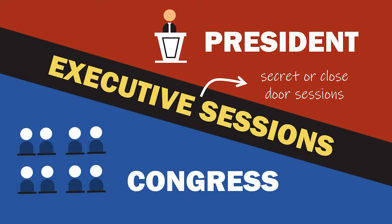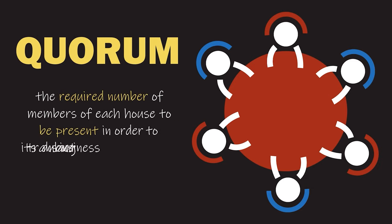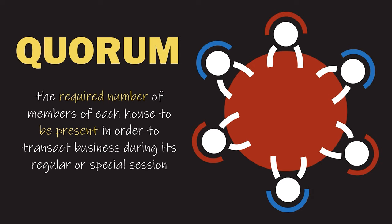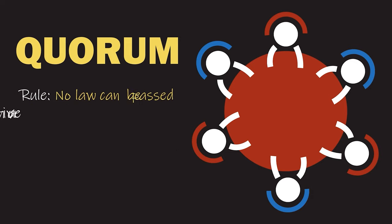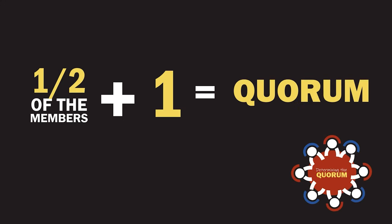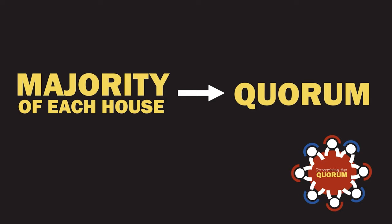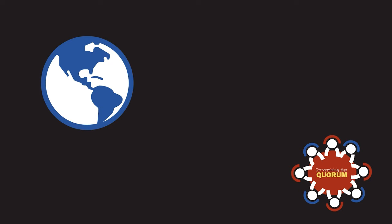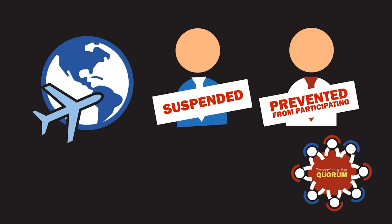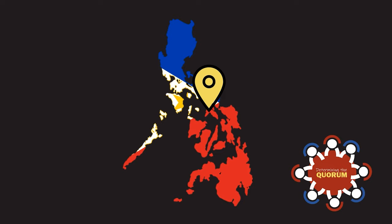Another important topic in Article 6 is quorum. Quorum is the required number of members of each house to be present in order to transact business during its regular or special session. No law can be passed or legislative function discharged unless the quorum is reached. Normally, one half plus one is the quorum — under our constitution, a majority of each house shall compose a quorum. Members who are abroad, suspended, or otherwise prevented from participating are not counted.